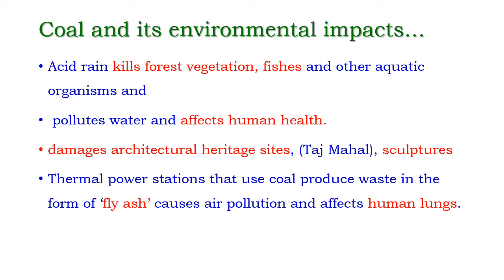Acid rain kills forest vegetation, fish, and other aquatic organisms, and also pollutes water and affects human health. Organisms — whether plants or animals, the flora and fauna — which consume the acidified water will be affected by the acid present in the water. Moreover, acid rain also damages architectural heritage sites and sculptures. The Taj Mahal is a well-known example — its shiny structure is now losing its shine due to air pollution and acid rain in that area.